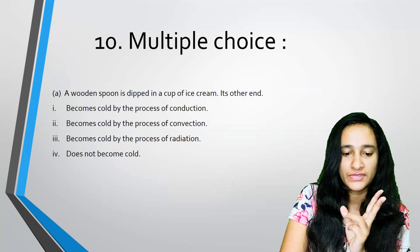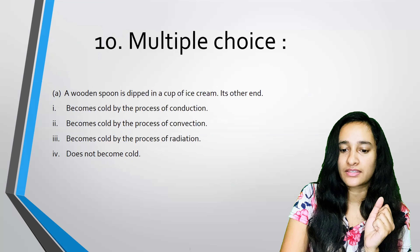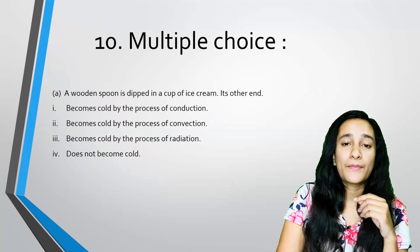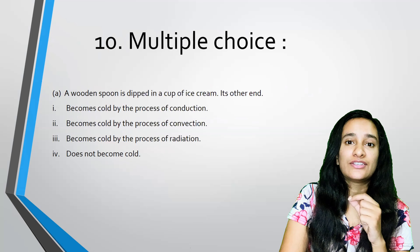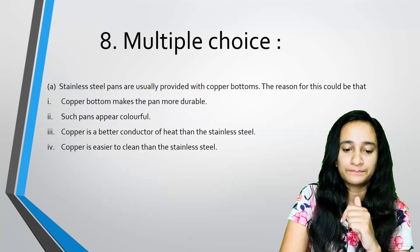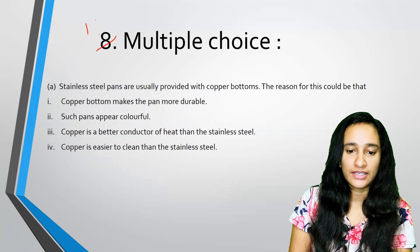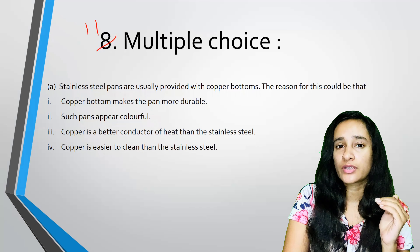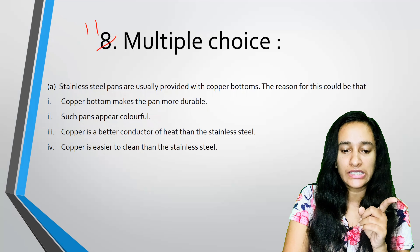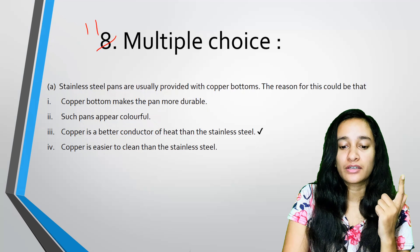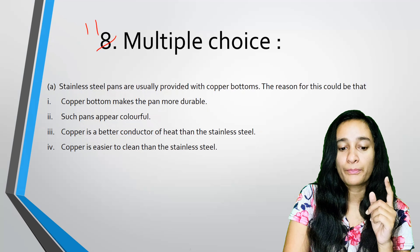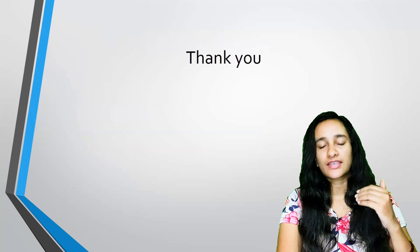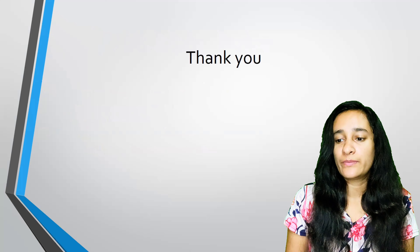A wooden spoon is dipped in a cup of ice cream — what happens at the other end? Since wood is an insulator, nothing will happen; it does not become cold. Stainless steel pans are usually provided with copper bottoms — why? Copper is a better conductor of heat than stainless steel, so the pan heats more evenly.